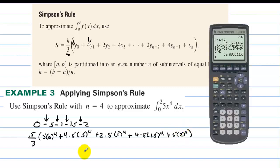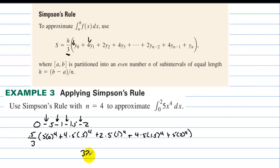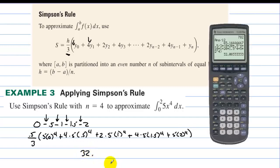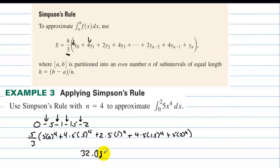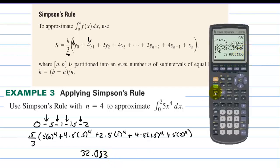I have entered it in the calculator, and we get 32.083. And if we check that against fnInt, let's see, number 9, we have 5x to the 4th. And the variable is x, and we're integrating from 0 to 2. And the actual value is 32, so it's a pretty close approximation.